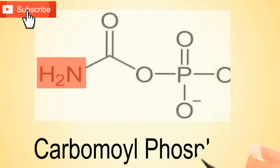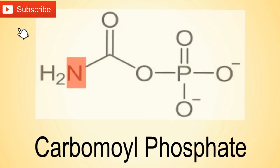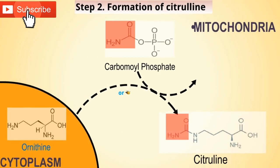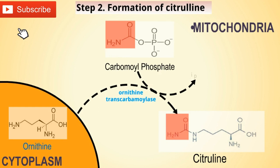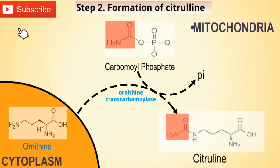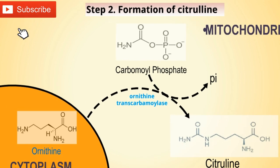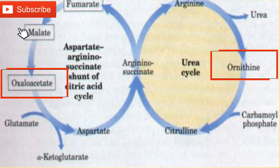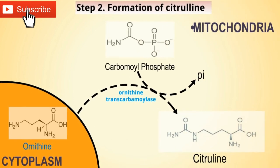Carbamoyl phosphate is converted to citrulline by ornithine transcarbamoylase. Ornithine is regenerated and used in the urea cycle. The role of ornithine is comparable to that of oxaloacetate in the citric acid cycle. Ornithine and citrulline are basic amino acids.